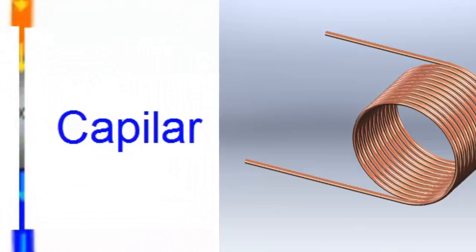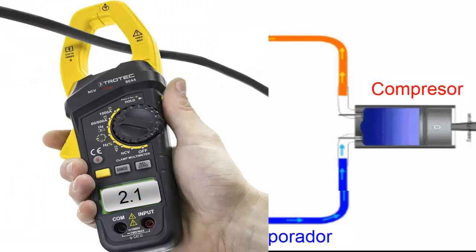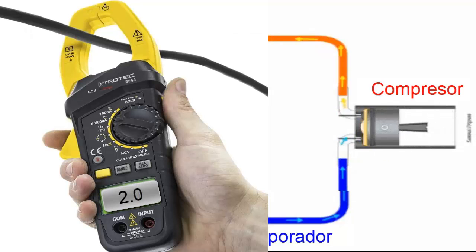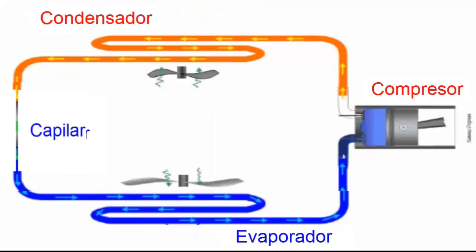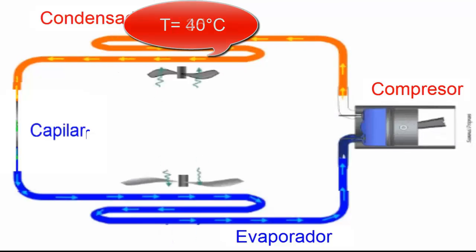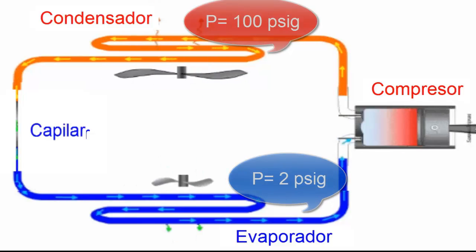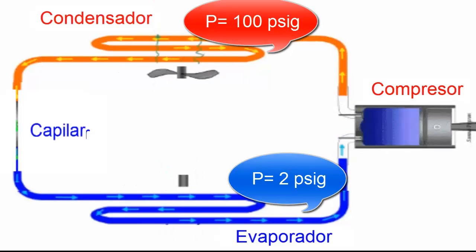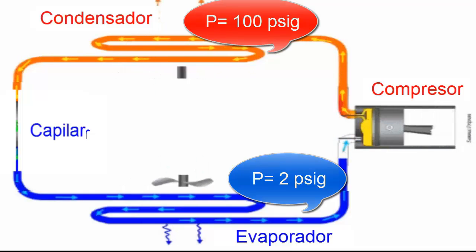8. Depending on the location of the obstruction, there may be signs of freezing at the capillary tube outlet. The condenser loses temperature and gradually approaches ambient temperature. The compressor's amperage consumption also decreases. 11. This behavior indicates how a system responds to an obstruction: a decrease in low pressure, a peak in high pressure, and eventual stabilization with lower pressures, along with signs of freezing, changes in condenser temperature, and a decrease in compressor amperage consumption.